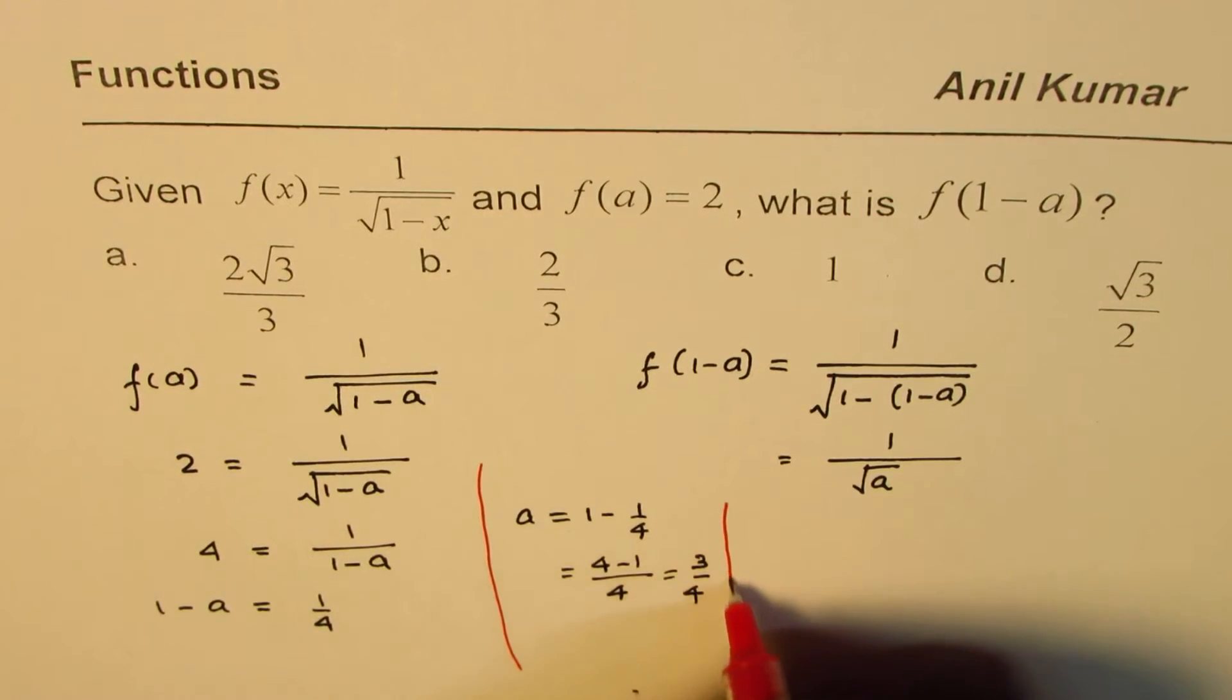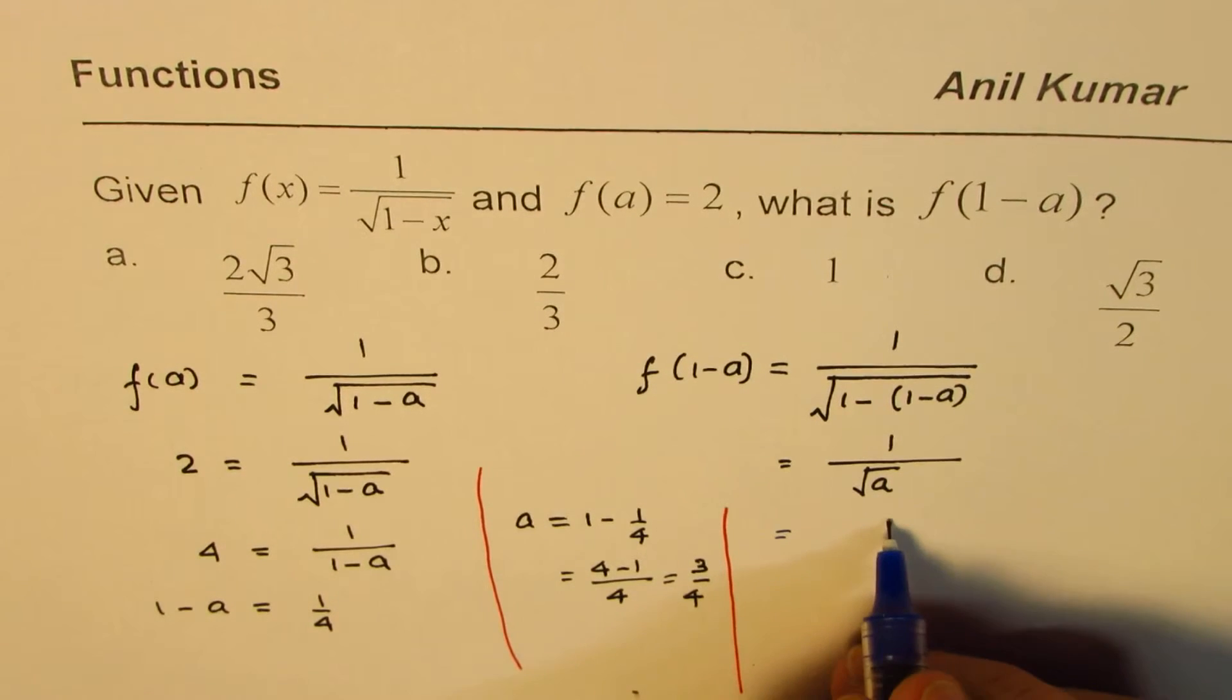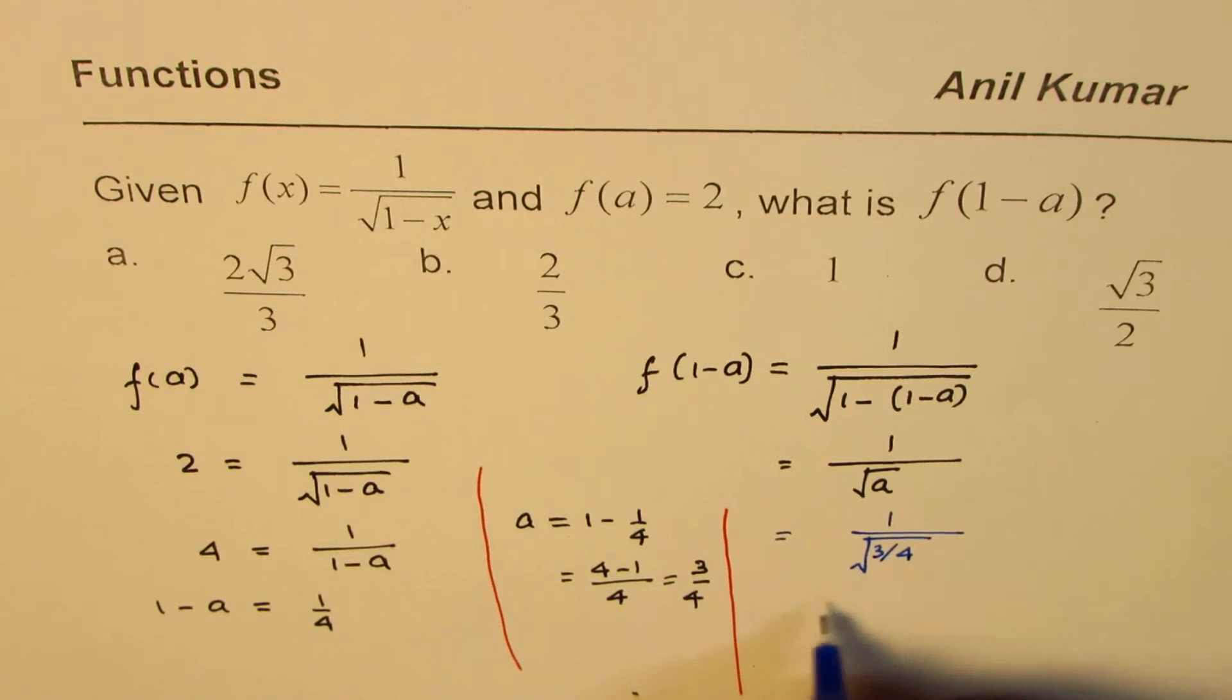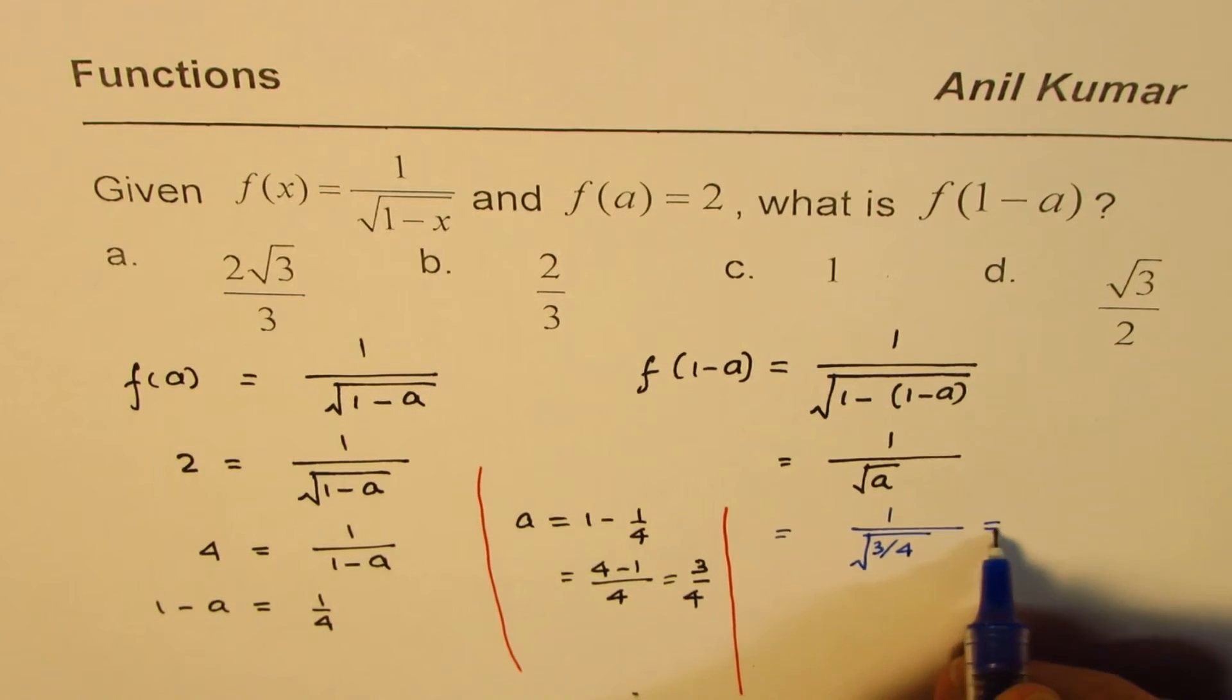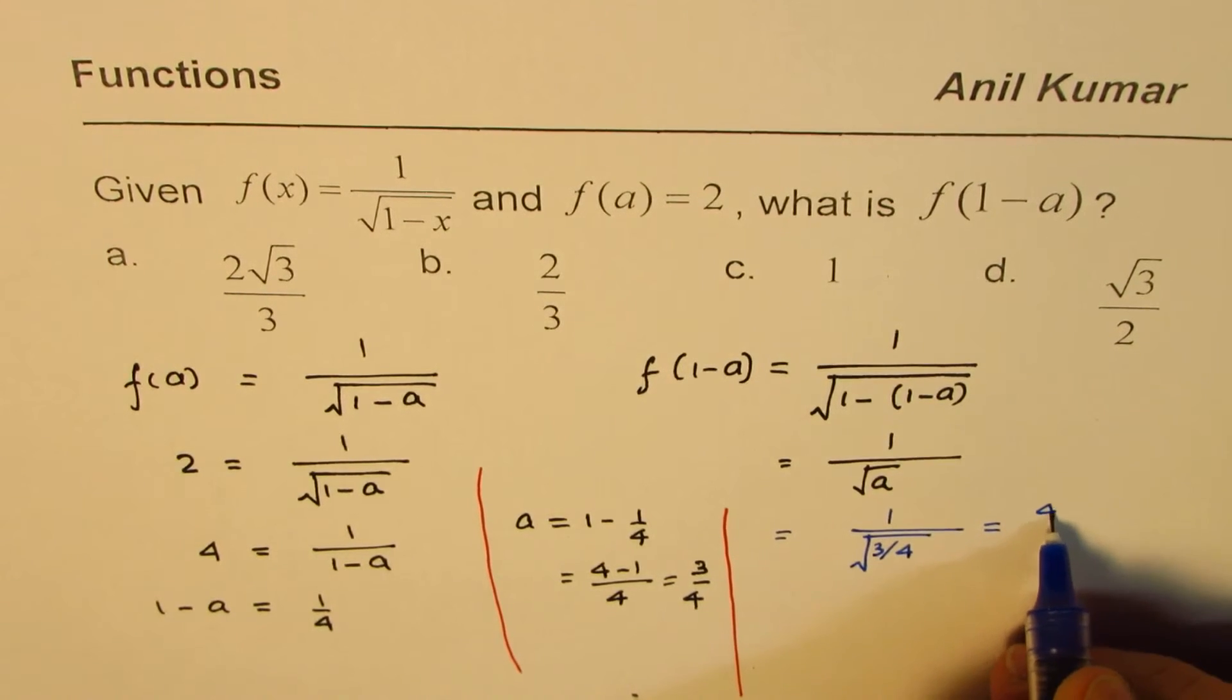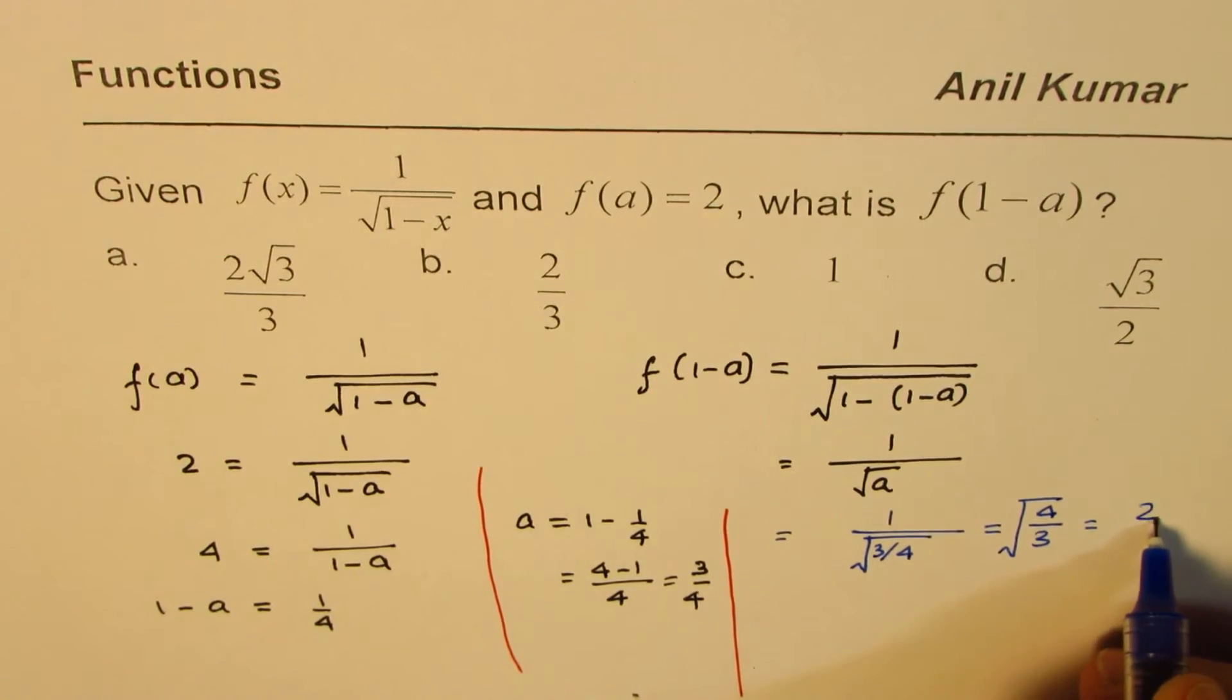So, once you get the value of a is 3 by 4, you can substitute here. So, let me substitute and find the value. So, it is 1 over square root of 3 over 4. So, that gives you square root of 4 is 2. So, you could write this as 4 over 3 square root, or 2 over square root of 3.